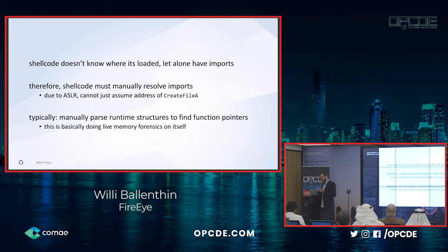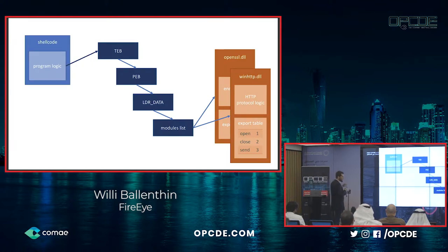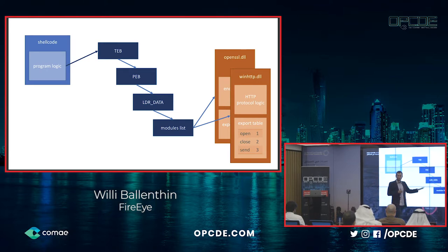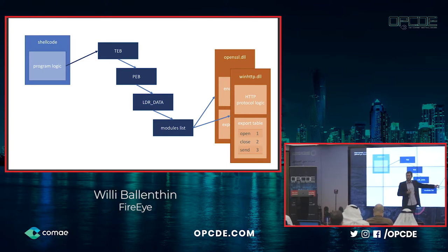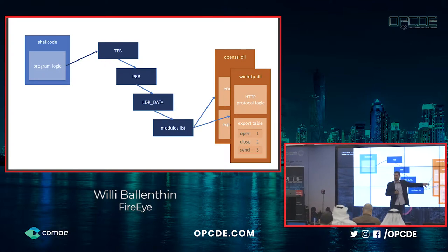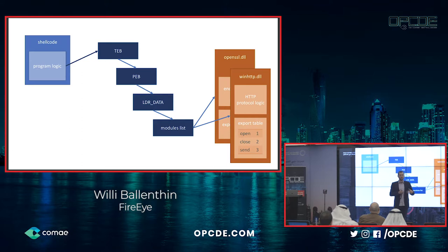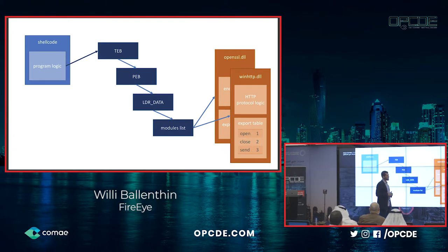Shellcode has to do all this work manually — it brings along its own implementation of what the Windows loader does. In practice, this looks like doing memory forensics on itself: finding global structures, following pointers, using knowledge of Windows internals to ultimately get a single function pointer for something like making an HTTP request. It's a lot of work, but it's the price you pay for deploying a shellcode payload. From a high level: the shellcode buffer walks global memory structures like the TEB and PEB, additional linked lists, to resolve the DLLs it needs — for encrypting data or connecting to the internet.